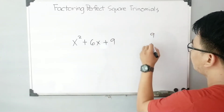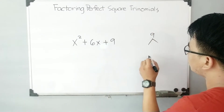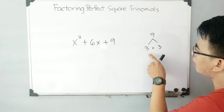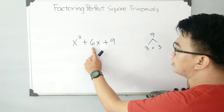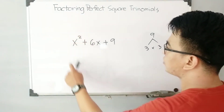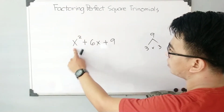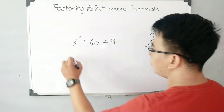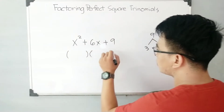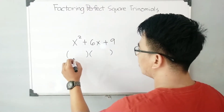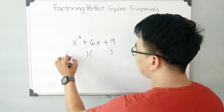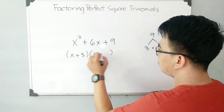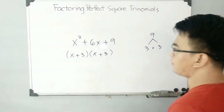So, if we have 9, let me think of two numbers. We have 3 times 3, that is 9. And then 3 plus 3, that will give you 6. And also, I will try to find the factors of x squared, and that is x times x.